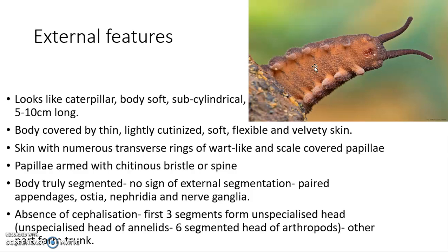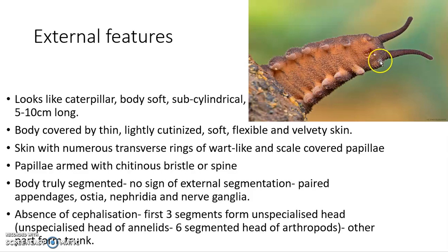The papillae are armed with certain cutaneous spines. The body is truly segmented but external signs of segmentation are absent. Paired appendages, paired ostia (openings of the heart), paired nephridia, and paired nerve ganglia can all be seen. There is also an absence of cephalization — a distinct true head is absent. The first three segments of the body are fused to form an unspecialized head, showing intermediate characters between annelids and arthropods.